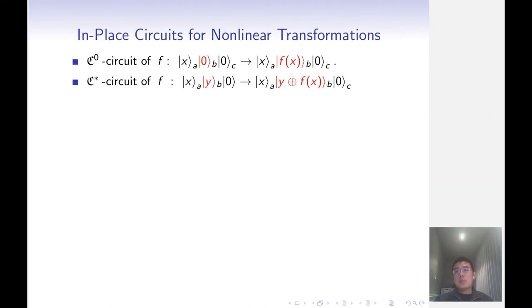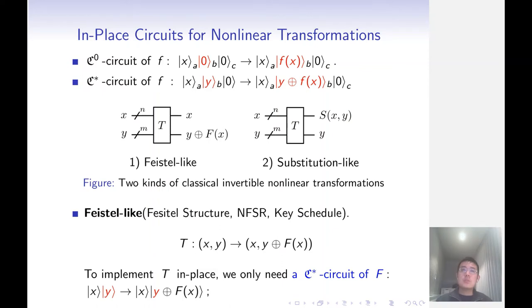Our next problem is implementing nonlinear transformations in place. Given an out-of-place circuit of function F, we call it a C0 circuit if it works when the output wires are initialized to 0, while we call it a C-star circuit if it works when the output wires are initialized to non-zero. Then we can classify the nonlinear transformations into two kinds.